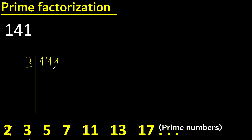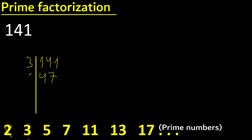141 divided by 3 is 47. 47 is a prime number, therefore divided by 47 is 1.